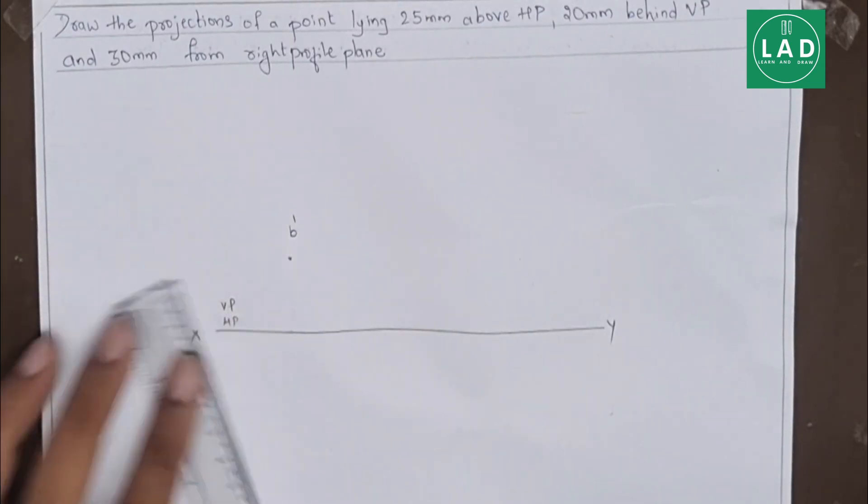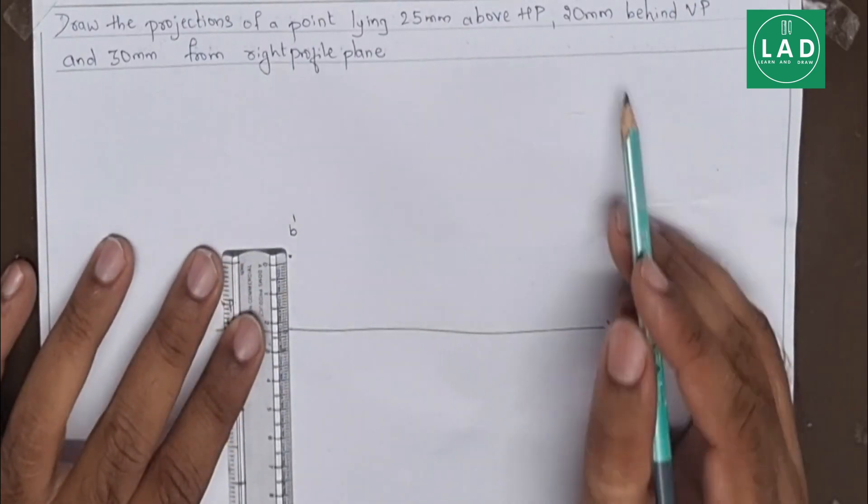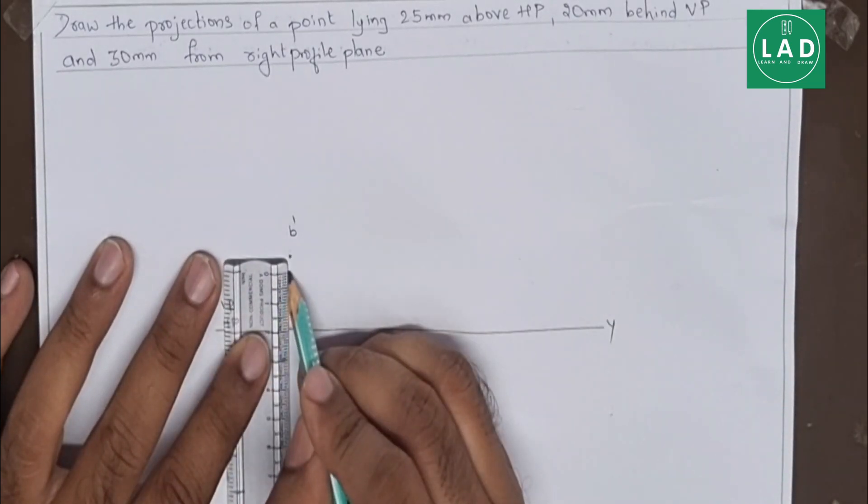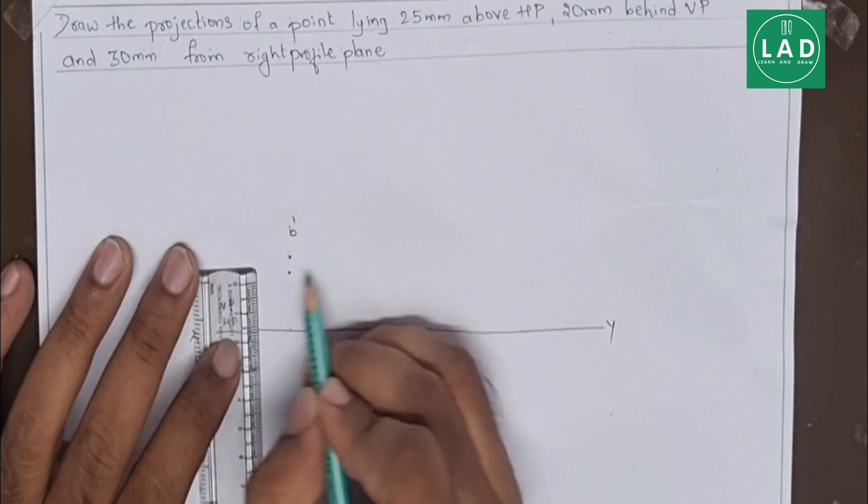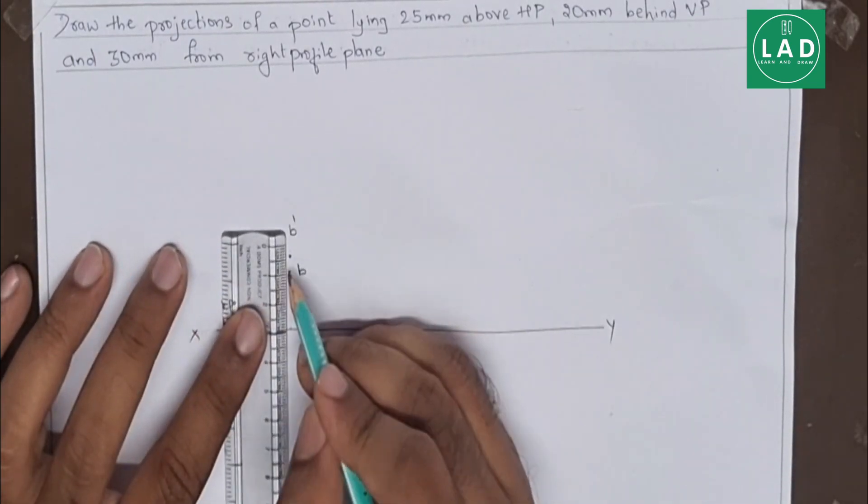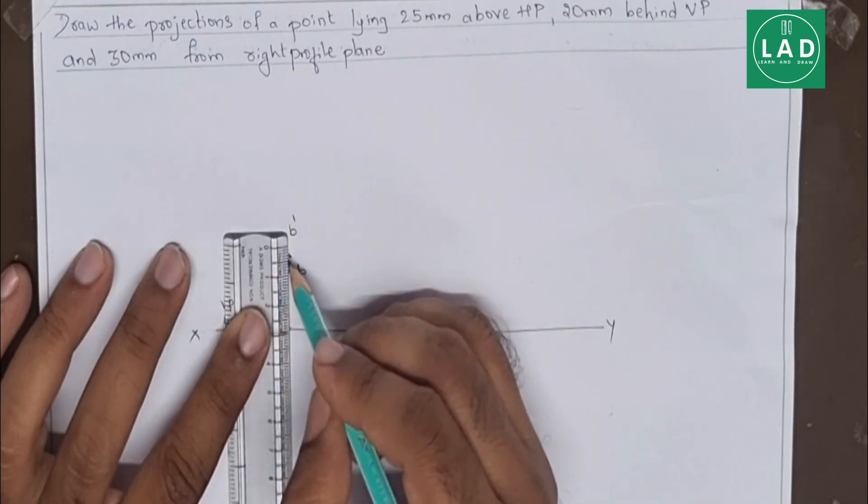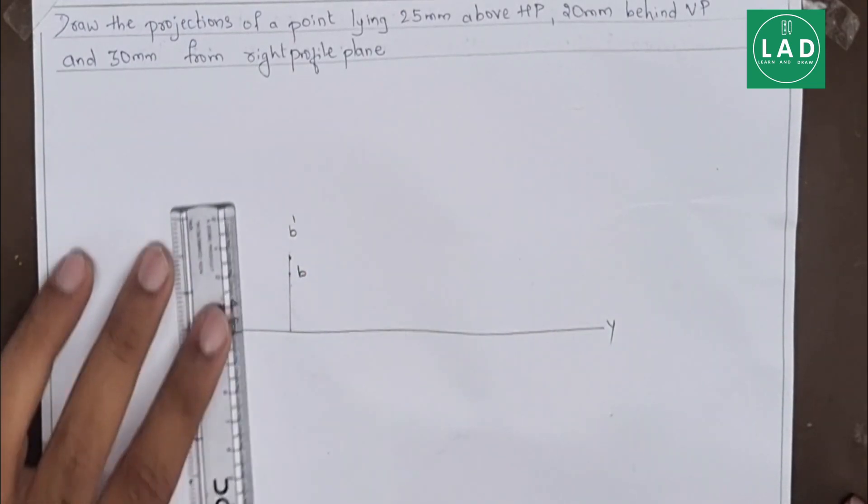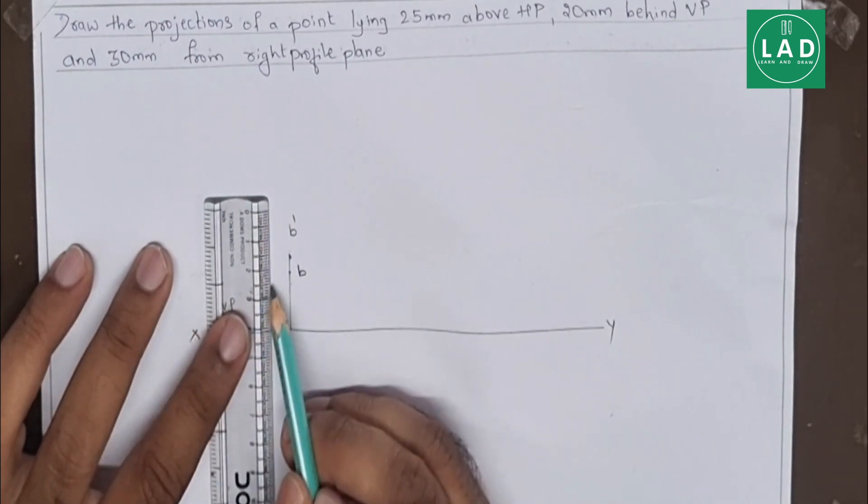Next, similarly, on the same point 20mm behind VP. As we see, this is the point which I can mark this as B, this is 20mm behind VP. Let's join the line. Then name the dimension.